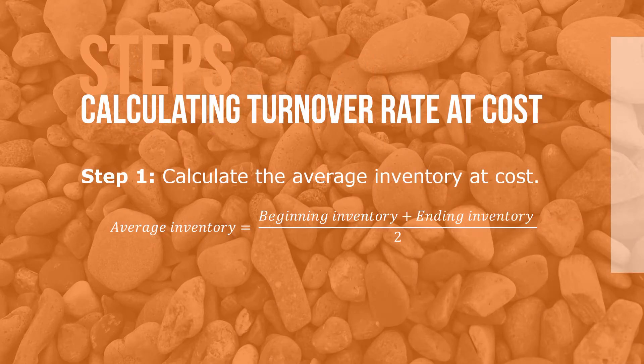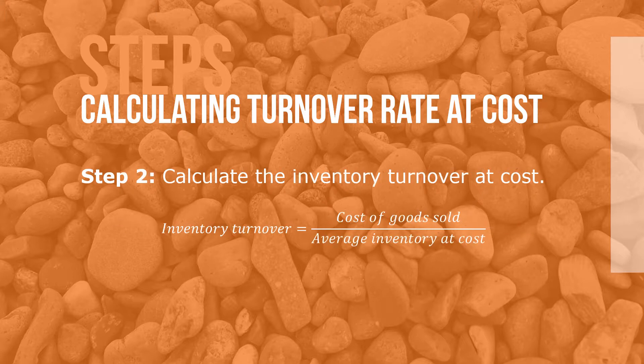Here are the steps. Step one: calculate the average inventory at cost, where average inventory equals beginning inventory plus ending inventory divided by two. Step two: calculate the inventory turnover at cost, which equals the cost of goods sold over the average inventory at cost.